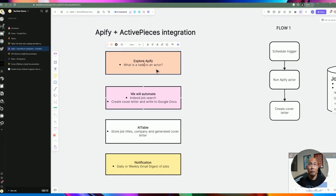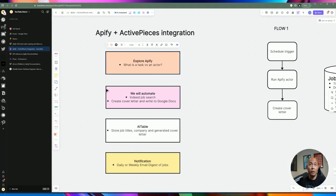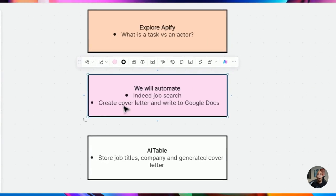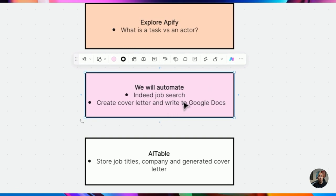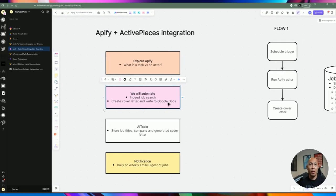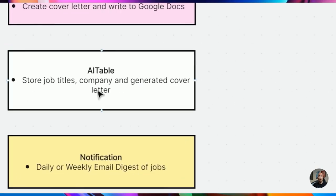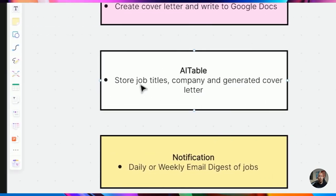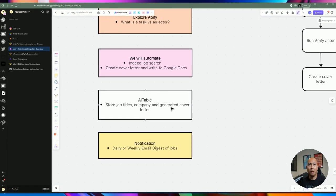What we're going to be doing today is automation for going to Indeed.com, doing a job search, and supplying parameters such as job title and location. Then we'll let AI create a cover letter for us and write it to Google Docs as part of the automation process. We're going to store everything in a table — job titles, company information, and the cover letter URL — and also store the URL for the Indeed job where you can apply directly.